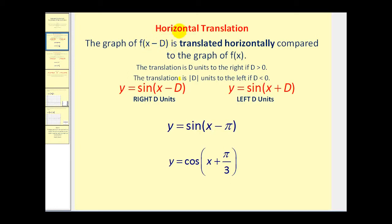The translation is the absolute value of d units to the left if d is less than zero. If d is negative, minus a negative d would give x plus d. So if it's in the form y equals sine of (x + d), it will be translated d units left. For example, y equals sine of (x - π) is a horizontal translation π units to the right, and y equals cosine of (x + π/3) will be π/3 units to the left.